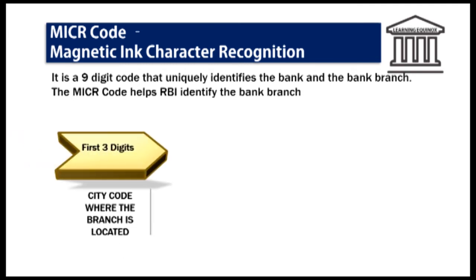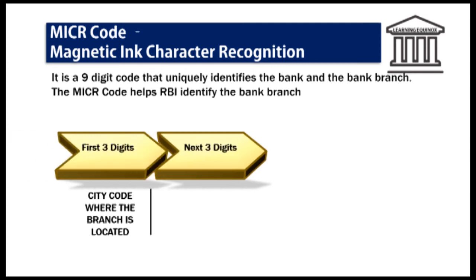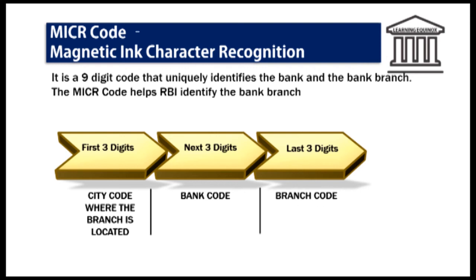The first three digits of the MICR code are the city code where the branch is located. The next three digits stand for the bank code, and the last three for the code of the branch. So this MICR code helps the clearing system to identify the exact bank and bank branch from where the check has been issued.